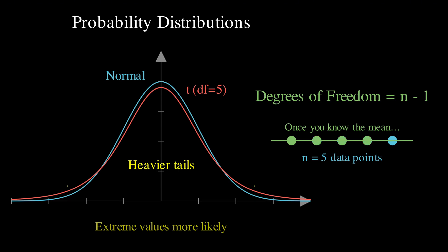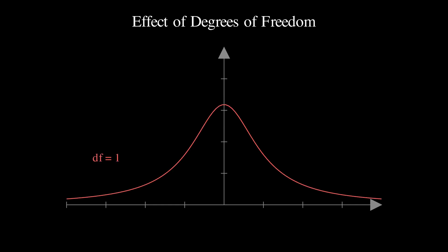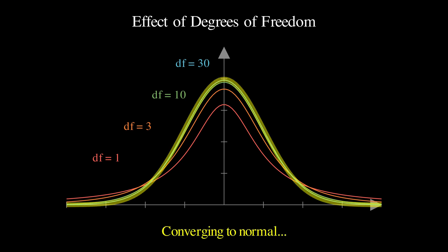When the degrees of freedom are small, like when you have a sample of only 5 or 6 observations, the t-distribution looks quite different from the normal distribution with much heavier tails, which means you need to be more conservative in your conclusions because extreme values are more likely. And as your sample size increases, and therefore your degrees of freedom increases as well, something really nice happens.